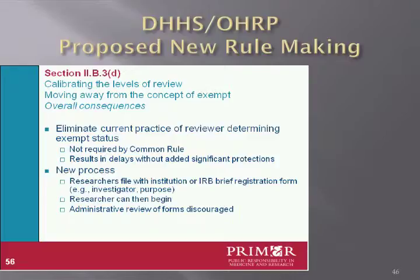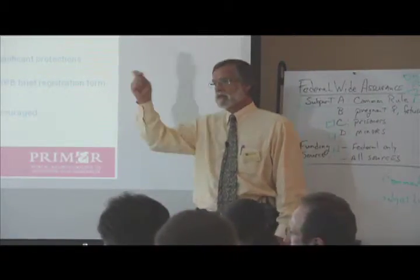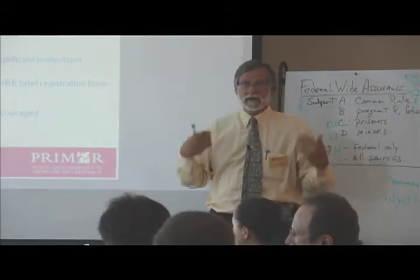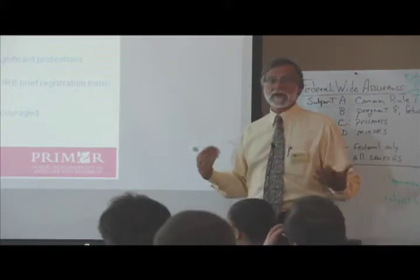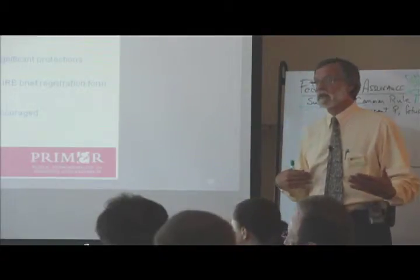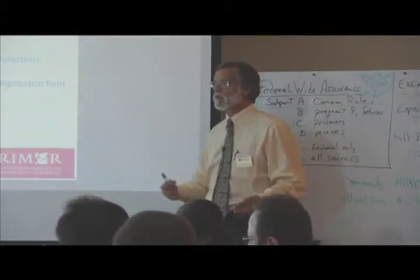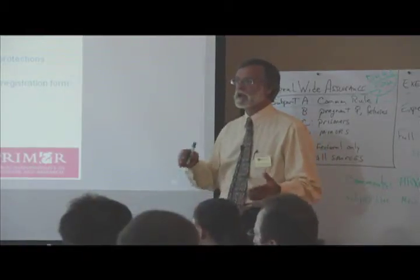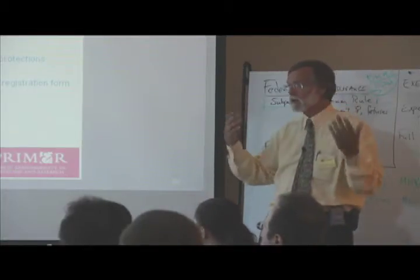Currently, if a researcher thinks their proposed project is exempt, they write it up, send it to the IRB, and say they think it's exempt under category 4 or whatever. It goes to an IRB member, who then either agrees or disagrees. We disagree between 10 and 20 percent of the time — we don't think it fits in an exempt category and it has to be upgraded to expedited. Or it comes in asking for expedited review and we say it can be downgraded to exempt, no consent form needed. We get mistakes by researchers in both directions.